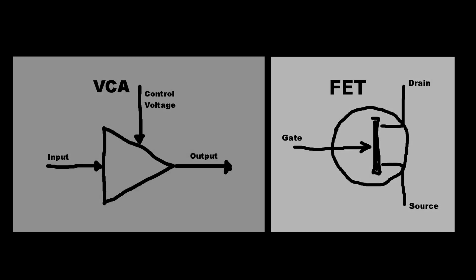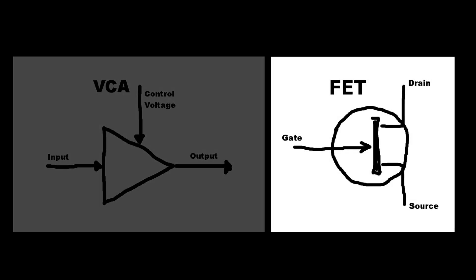The transistor design we can look at more as a channel. As the gate voltage changes, the channel narrows, constricting the flow of the signal through the transistor's in-and-out terminals — called the source and drain for technical accuracy.